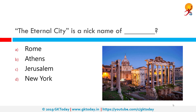The Eternal City is a nickname of which place? The correct answer is Rome. Rome, which is Italy's capital, is a sprawling cosmopolitan city with nearly 3,000 years of globally influential art, architecture, and culture on display. Also, the Vatican City, which is the headquarters of the Roman Catholic Church, is located there.